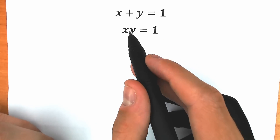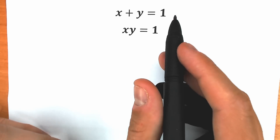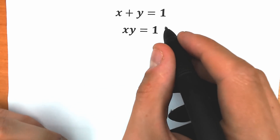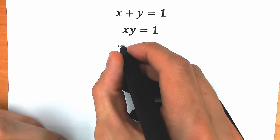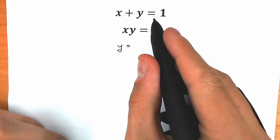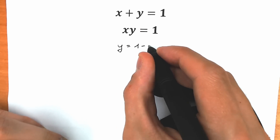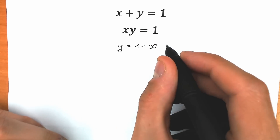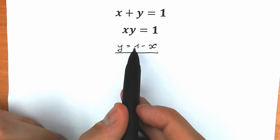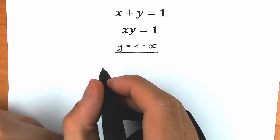For this type of question we need to express x through y, or y through x. So right now, for example, let's express y. From the first equation we have y equal to 1 minus x. So we have 1 minus x, and right now let's plug this y equal to 1 minus x into the second equation.